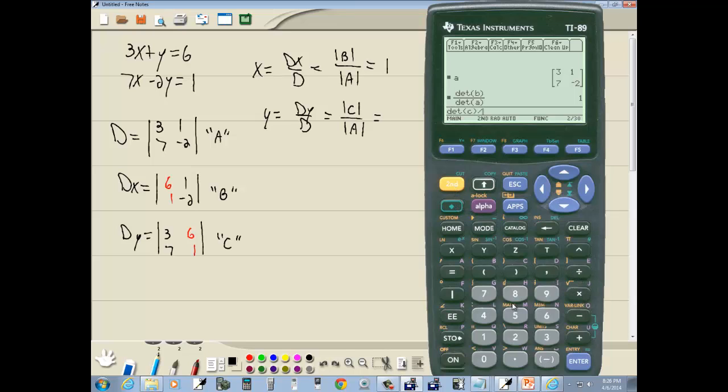And then I'll do second 5 to go to the math menu, 4 for matrix, 2 for determinant. And we want to determine the A so I do alpha equals to get A and then close parentheses and then press enter. And you see we get 3.